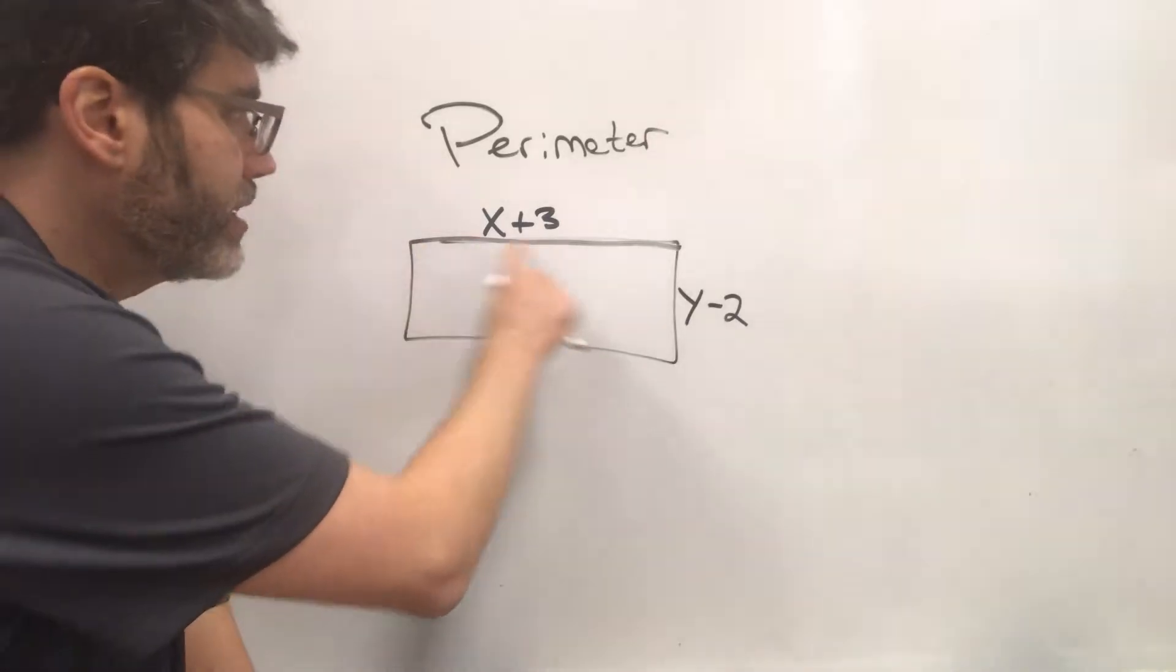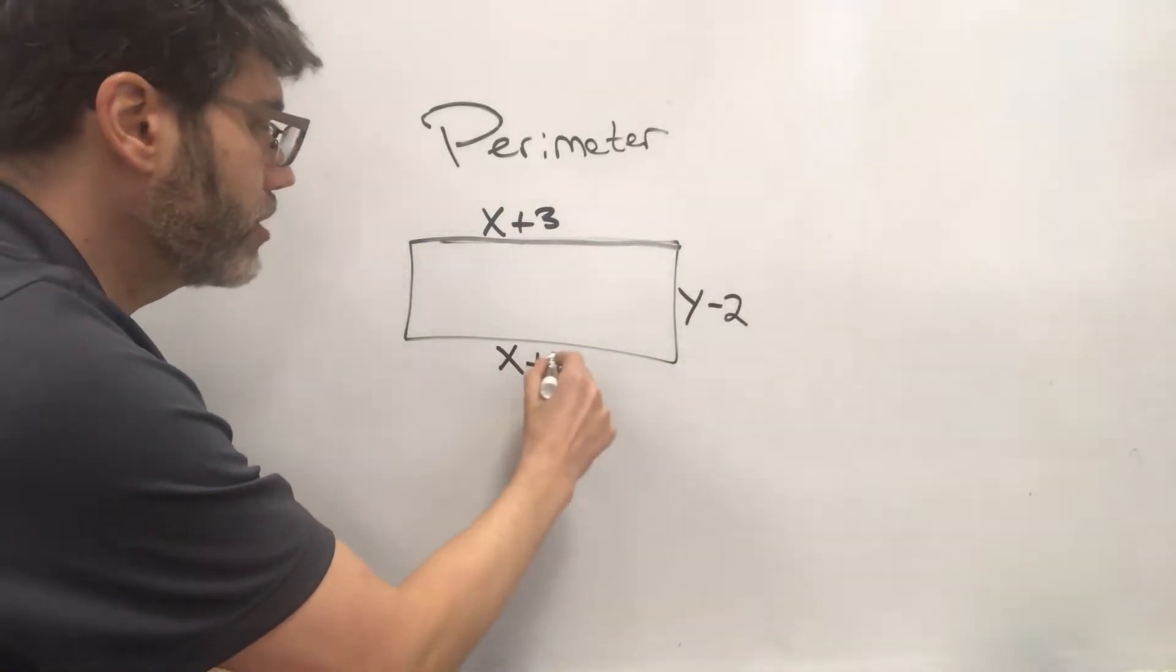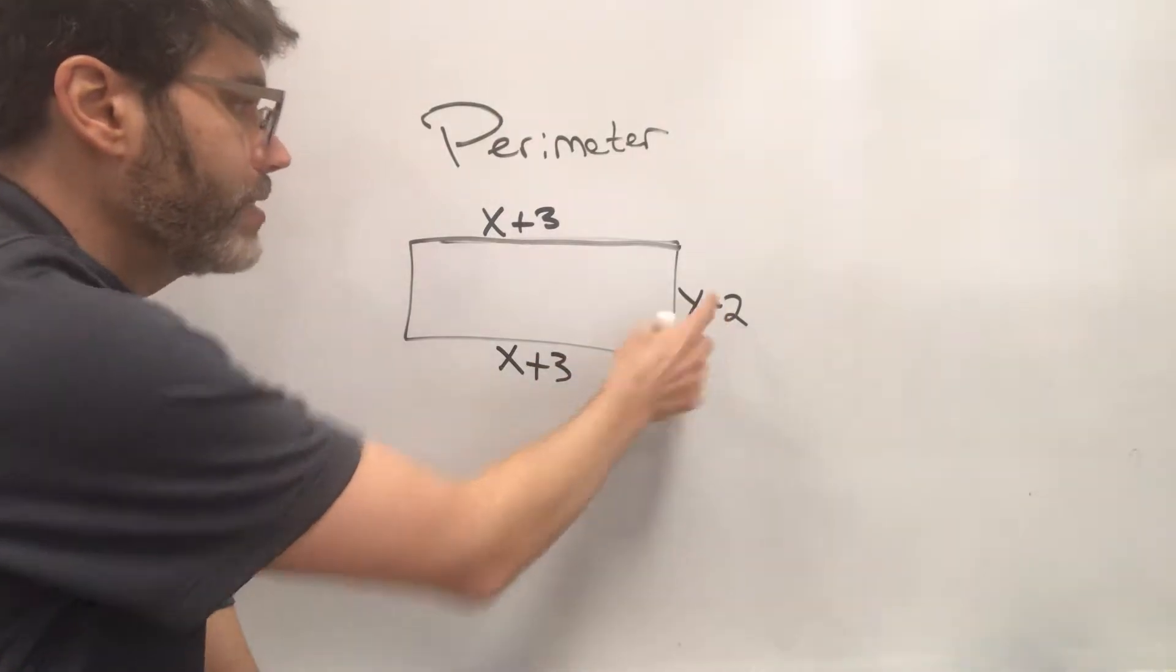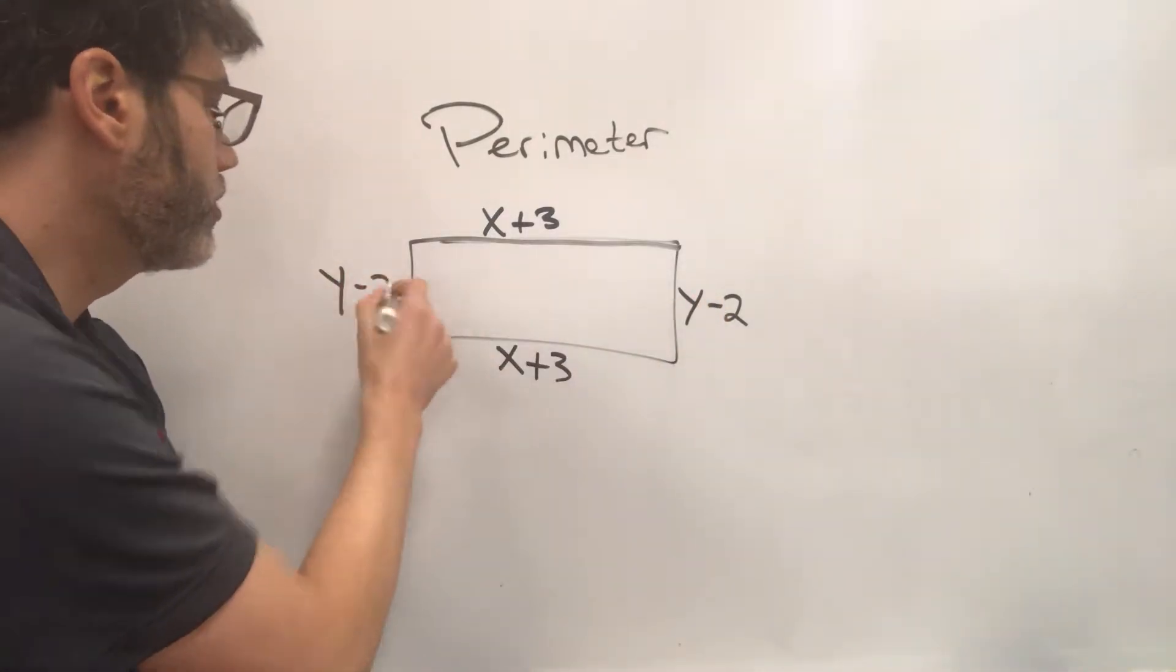So if this side is x plus 3, then this side is also going to be x plus 3. If this is y minus 2, this is also going to be y minus 2.